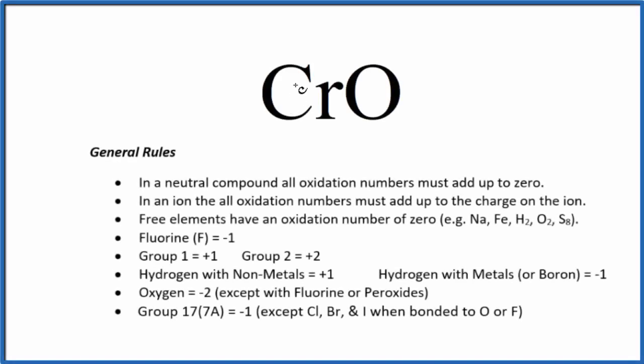To find the oxidation number for each element in CrO, this is chromium 2 oxide, we'll use these rules here. First thing we need to know is that this is a neutral compound. There's no negative or positive sign here, so it's a neutral compound. Since it's a neutral compound, all the oxidation numbers add up to zero.